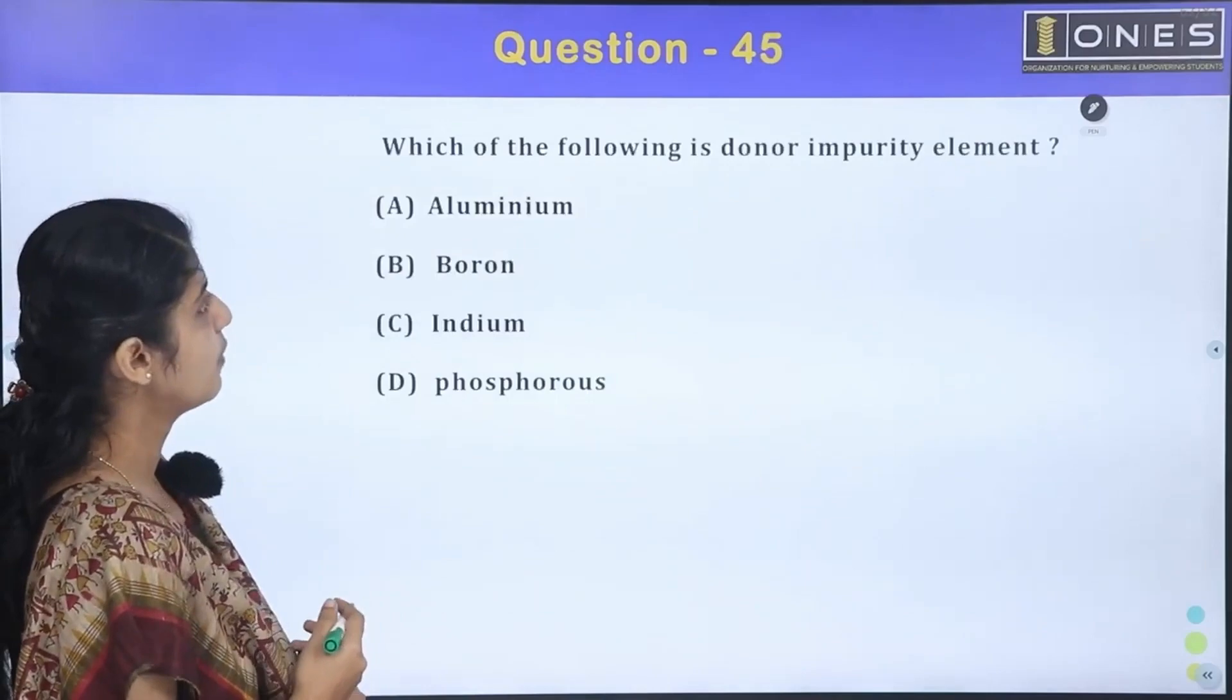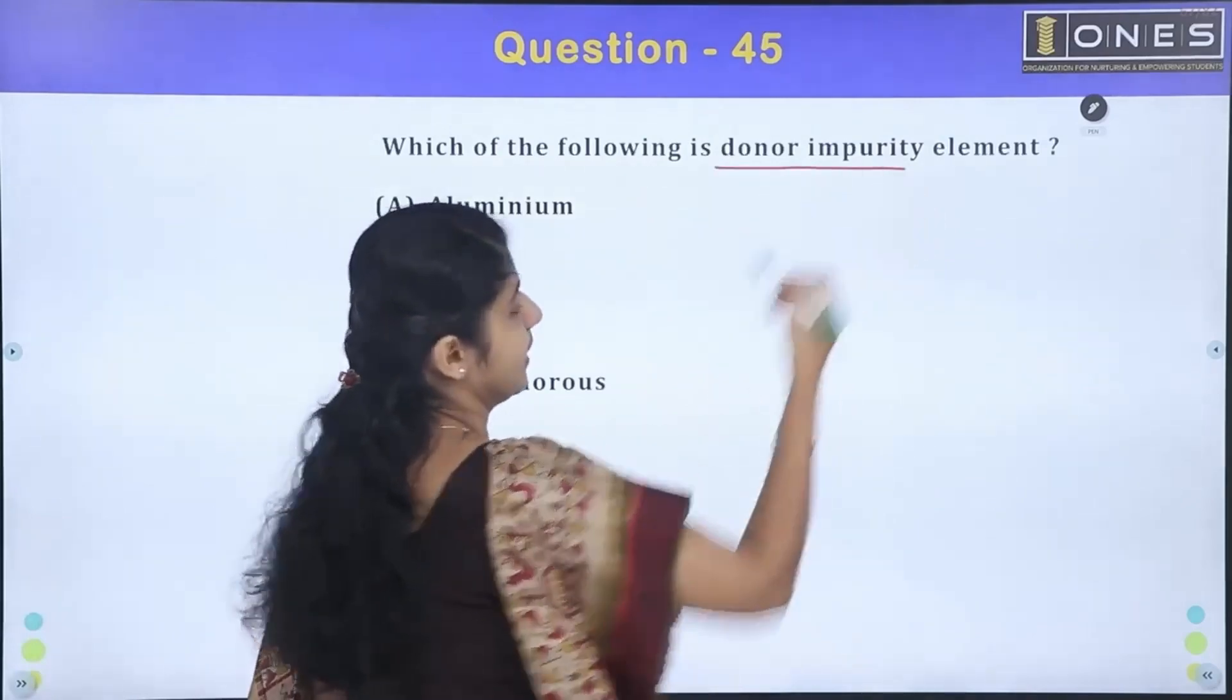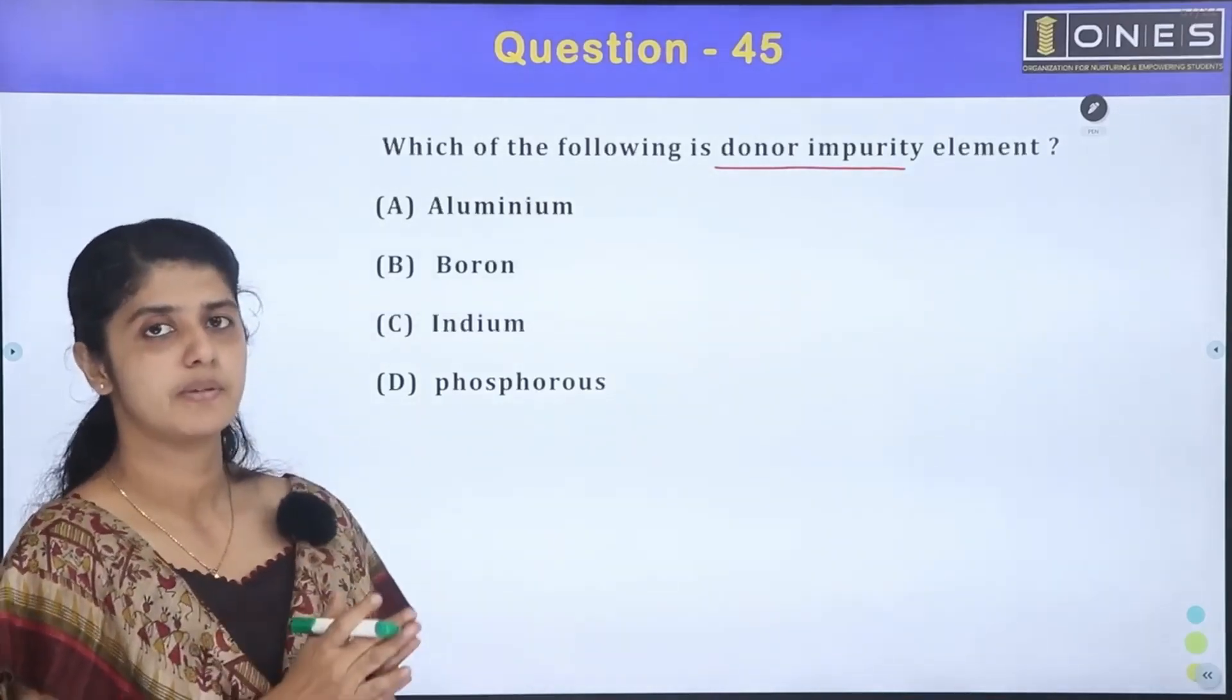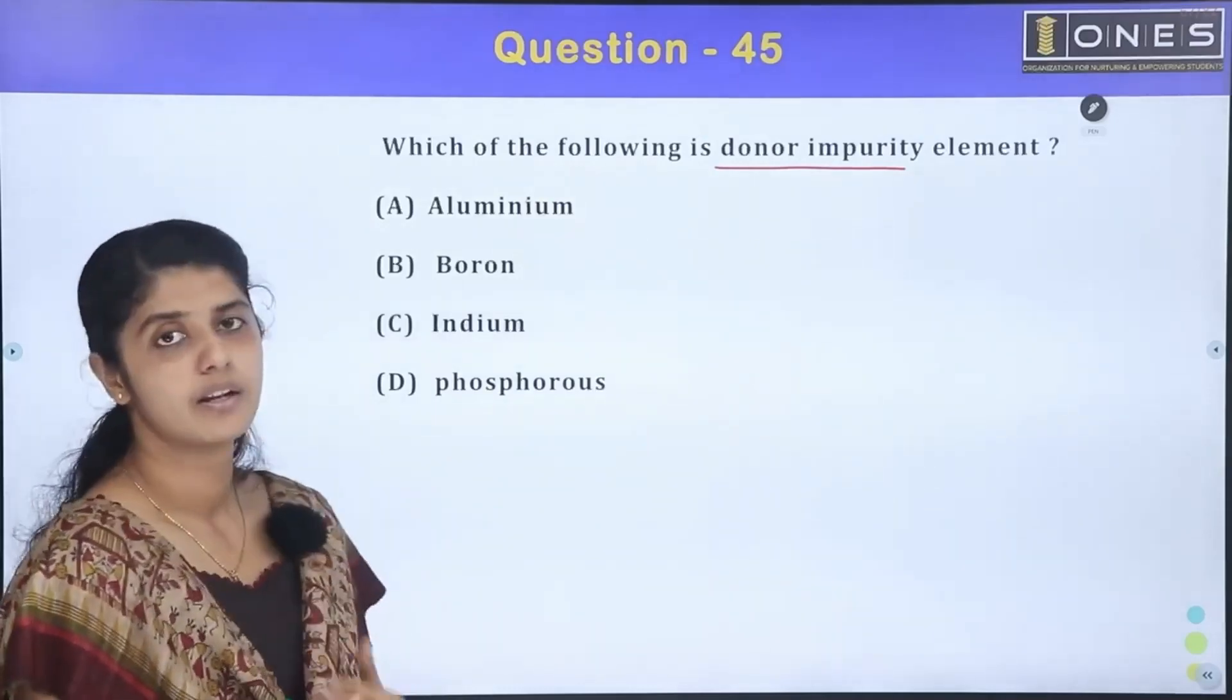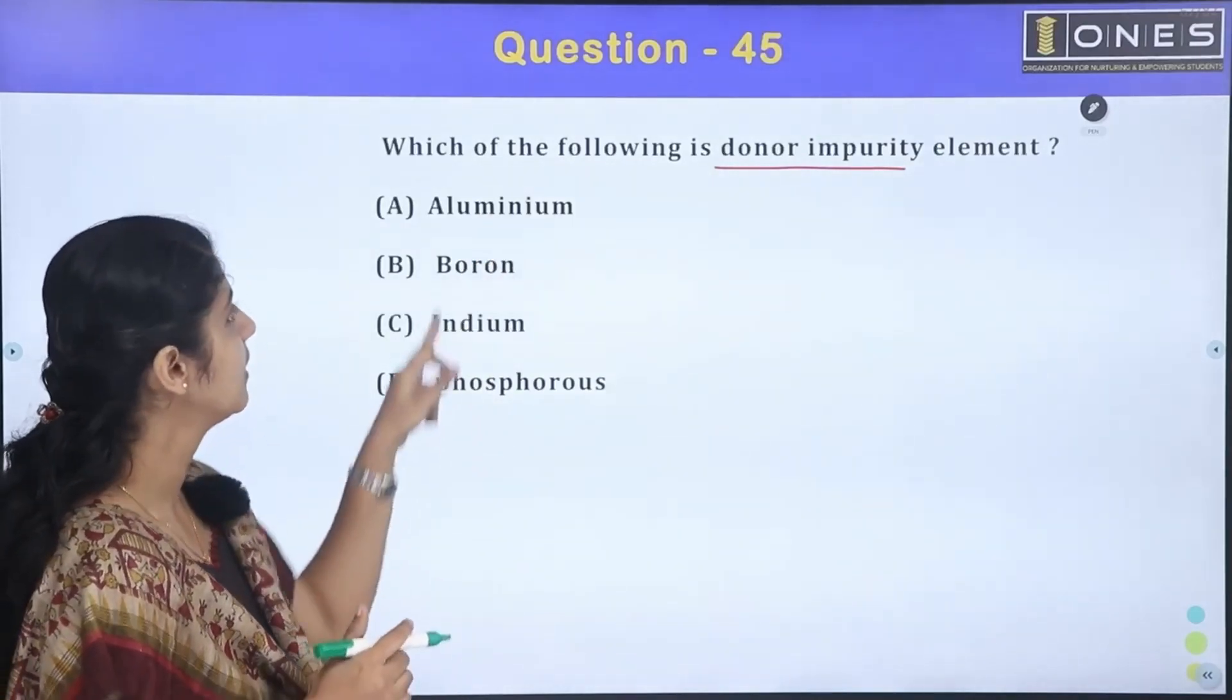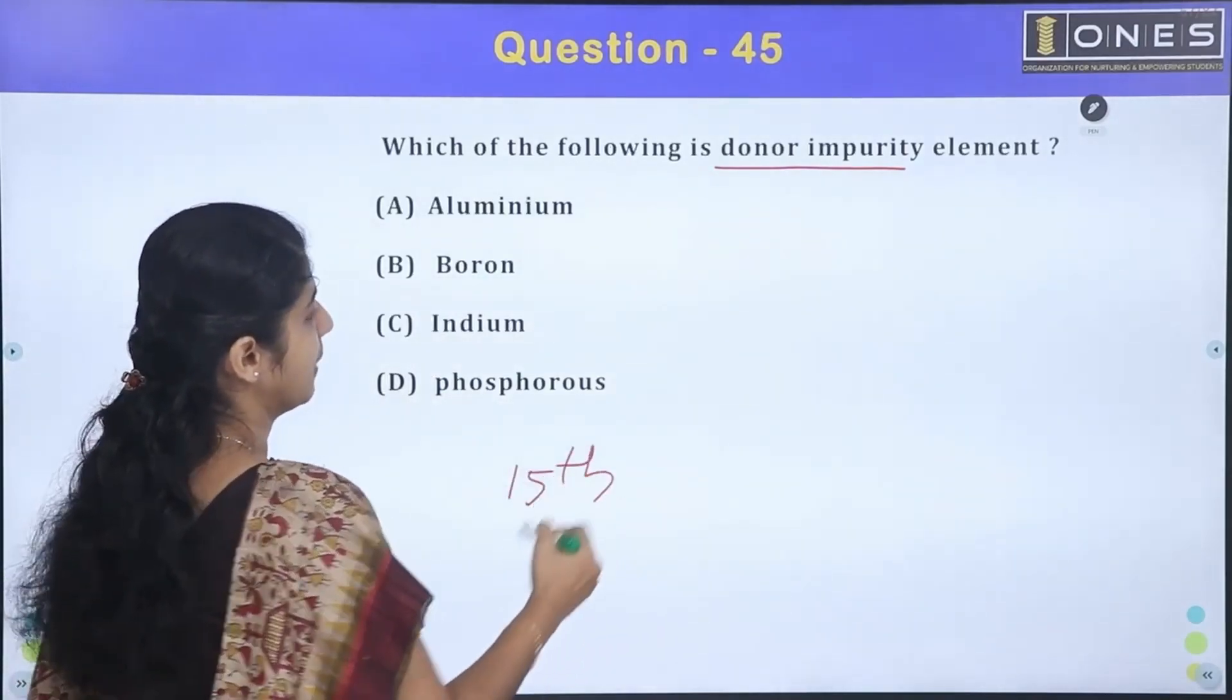Next question: Which of the following is donor impurity element? Donor impurity - this is an electron that provides any impurity. Let's start with the doping: P-type, N-type are two types. We can start with P-type. Now, if we add donor impurity, donor impurity is 15th group elements.